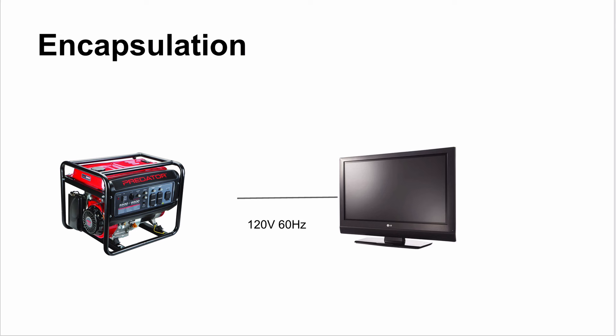Software architecture is really based on the idea of encapsulation — this is how we scale up to large programs by hiding information. You want to hide complexity from everybody else on your team. A good real-world example is power: a computer monitor is a very complicated thing, and a power generator is also a complicated machine.